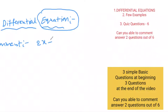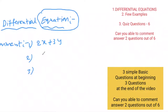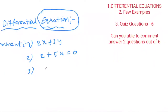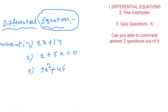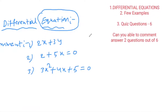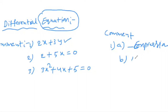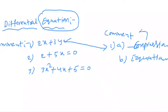For example, I am taking: 2x + 3y + 5x = 0, and 3x² + 4x + 5 = 0. Comment your answer below — is the first one an expression or an equation? If you think the first one is an expression, comment '1a' or 'expression'.